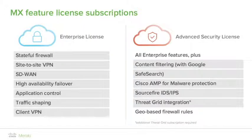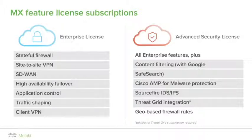MX feature license subscriptions. The MX security appliance supports two levels of license. Out of the box, your MX will include the enterprise feature license. The included enterprise features are super powerful and may exceed many of your customers' needs. The site-to-site auto-VPN feature is sufficient reason alone to choose MXs for your networks — a cloud-brokered VPN service that allows you to build a dynamic, self-healing, resilient IPsec VPN in a couple of clicks.